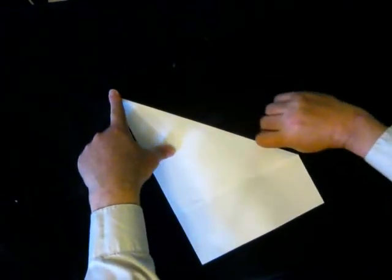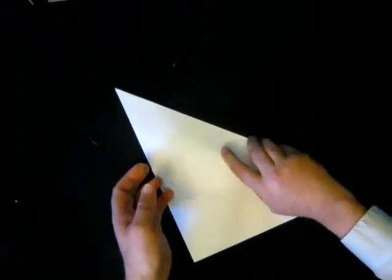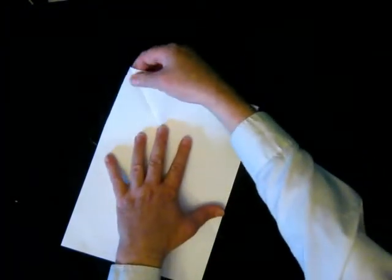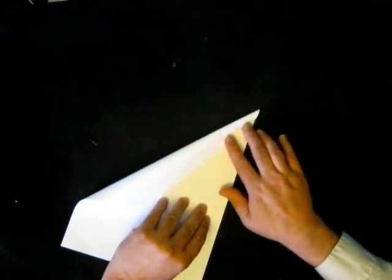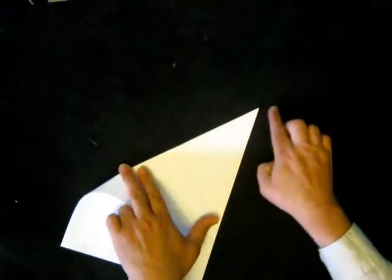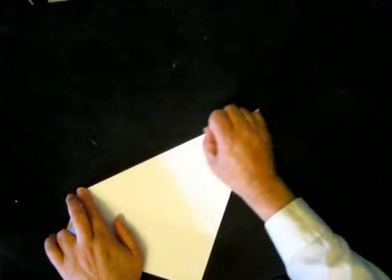We're going to use our thumb to make that permanent. I'm going to undo it and then do the same on the other side. I'm going to take this corner down and put a crease in there.